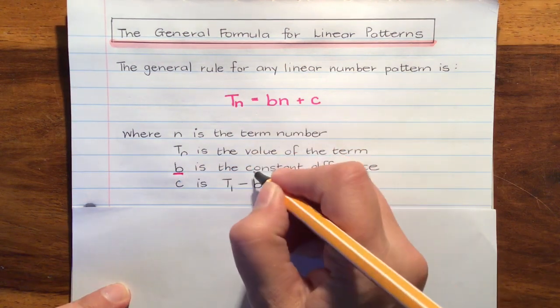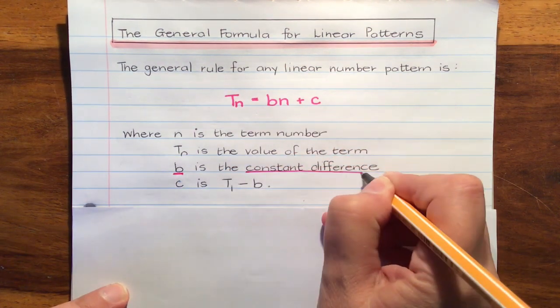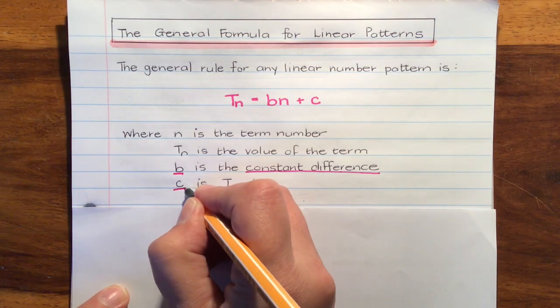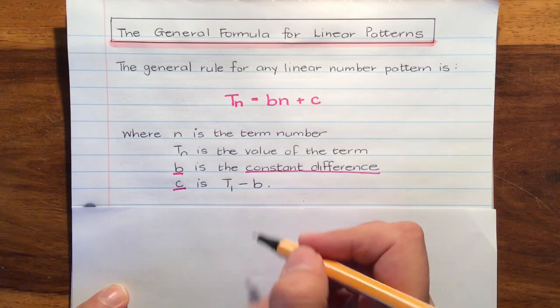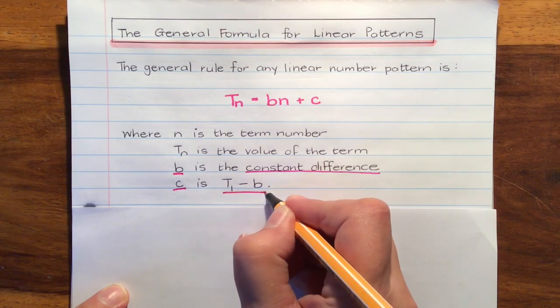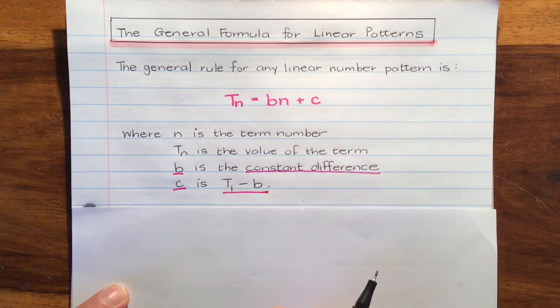You're going to have to know that off by heart. And also, C, you need to know that you calculate that by saying the first term minus the constant difference, T1 minus B.